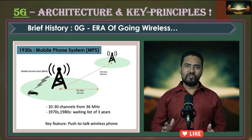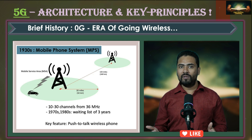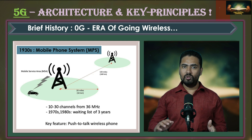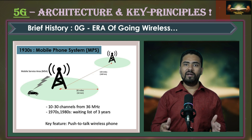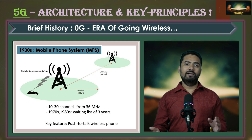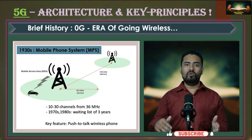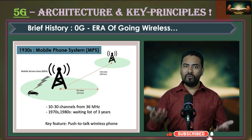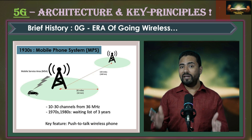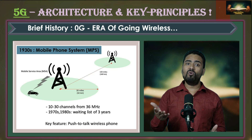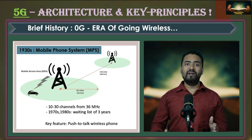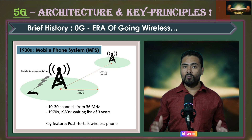Those communications started from the 36 MHz band and had hardly 10 to 30 channels only, meaning those systems could only accommodate very few users. During the 1970s and early 1980s, demand increased and users had to wait for their turn to get mobile services. Surprisingly, that waiting list reached up to 3 years, which shows the demand for more advanced wireless telecommunication systems.